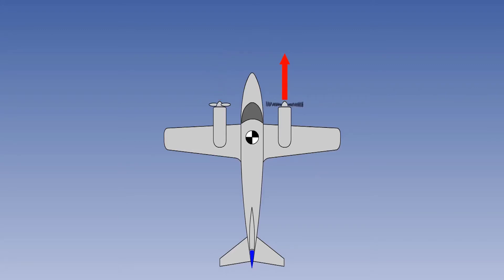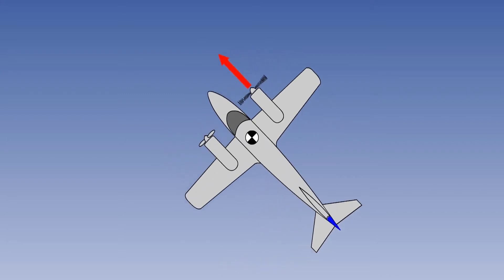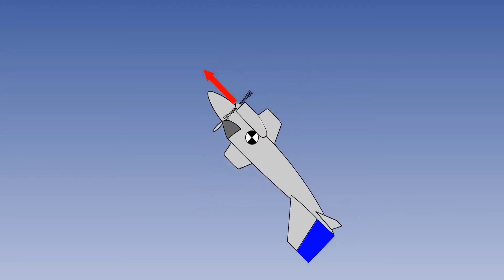The left engine fails and a left yawing moment is generated. Assuming the pilot makes no correction, the aircraft would yaw to the left. The yaw to the left would increase the lift on the right wing and decrease the lift on the left wing.